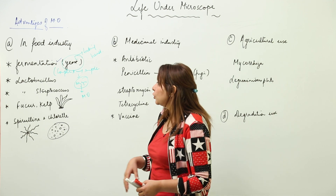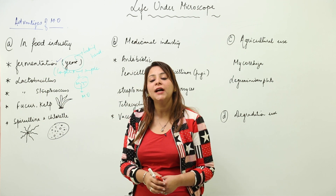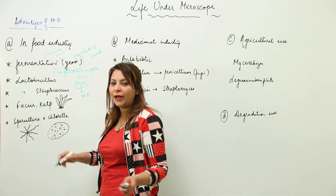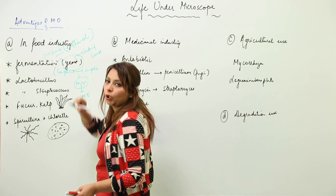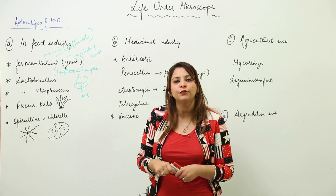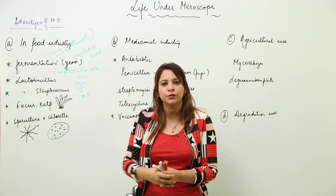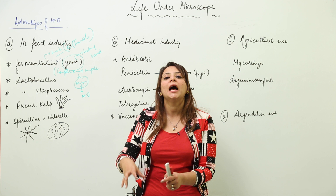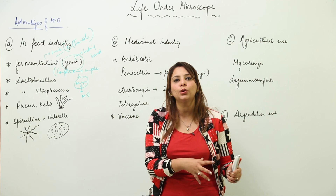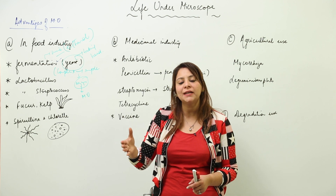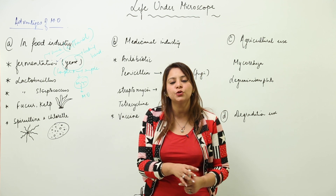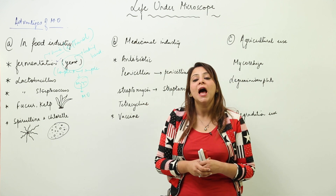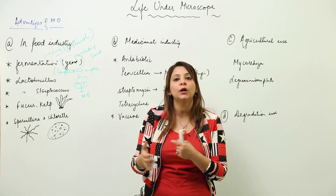Yeast is also used in breweries for the production of hard drinks like wine, because they contain ethanol. Fermentation is used in breweries to form ethanol, the major constituent of wines. Yeast secretes certain enzymes that convert sucrose into ethanol, since sugarcane juice — the raw material in breweries — mainly contains sucrose.